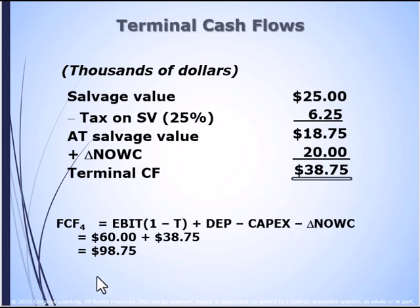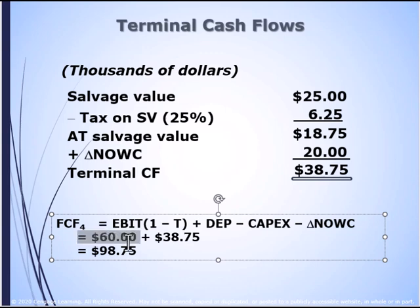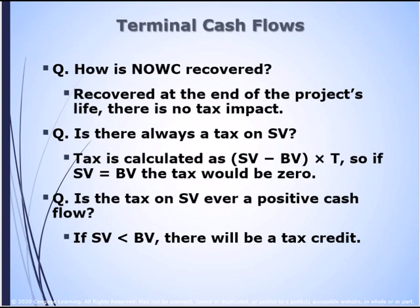So what's the final cash flow in year four? $60,000 came from operations, and $38,750 came from the terminal cash flow. To review: we recovered the net operating working capital at the end — no tax impact for that. We do have to worry about taxes on the salvage value. In this case it was the simplest case with 100% depreciation in the first year, so we need to calculate the tax on the sale of the old asset, but in this case that was pretty easy to do.